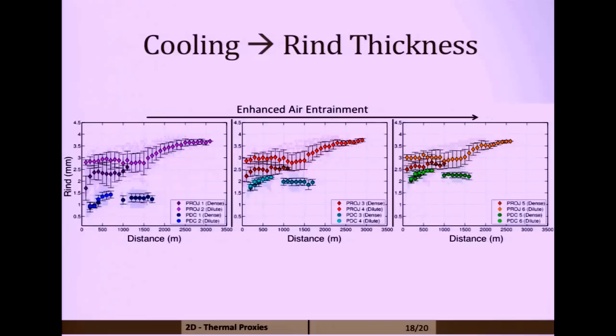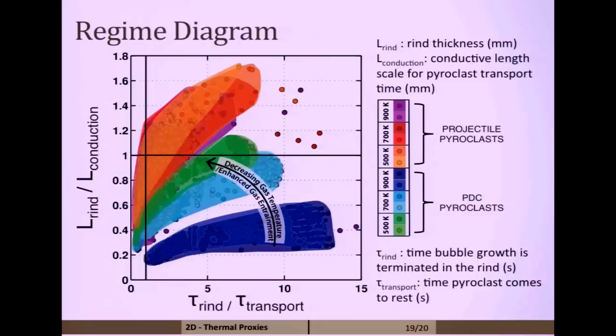From this, we've actually been able to create a regime diagram of how these clasts form, which previously hasn't been known. Through the numerical models, we're able to show that as you decrease your gas temperature or you have greater entrainment of air, you have a change in regime for these PDC pyroclasts. Essentially their rind thickness increases.